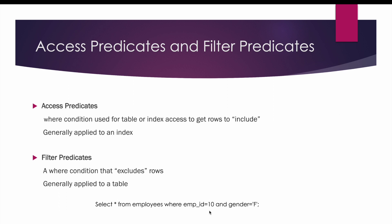For example, if we use the index on employee_id = 10, we are accessing only one row since employee_id is the primary key. Since we are touching the employees table using the index on employee_id = 10, employee_id becomes your access predicate — we are including rows where employee_id is equal to 10.